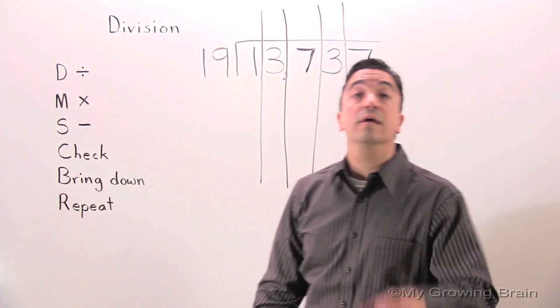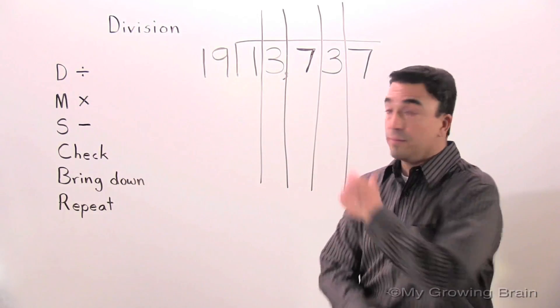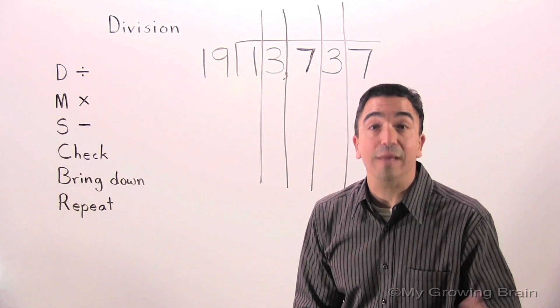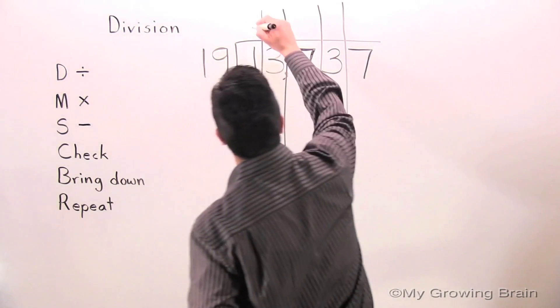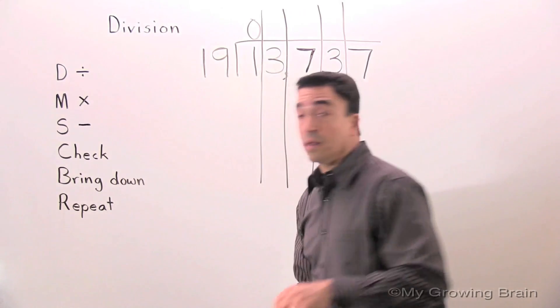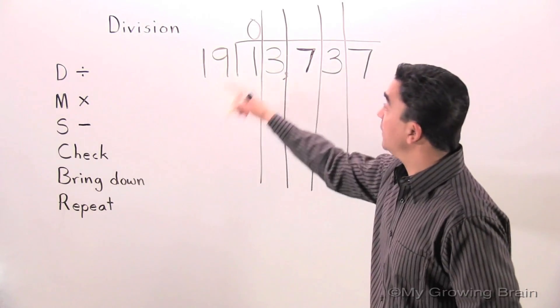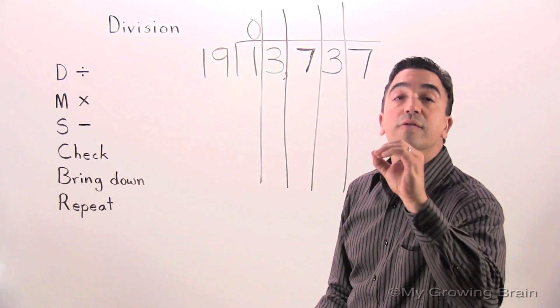Step one, divide. One divided by 19. Can't do it. Use a zero. Next step. Multiply. 19 times zero, zero.